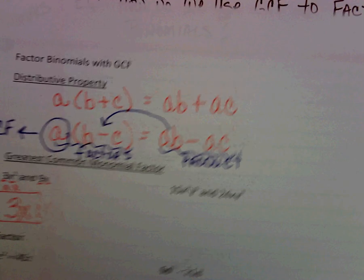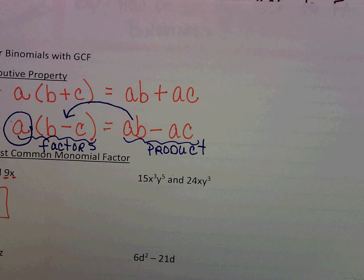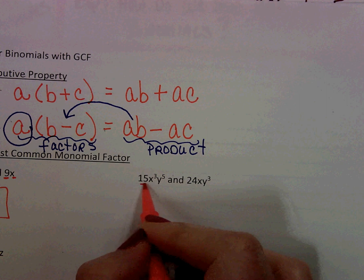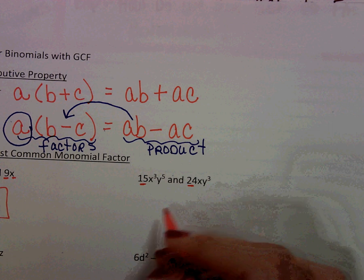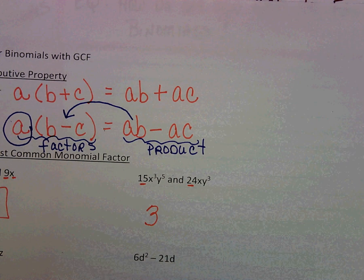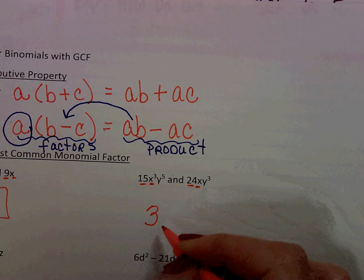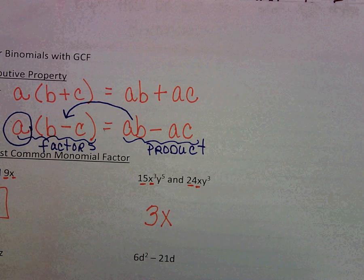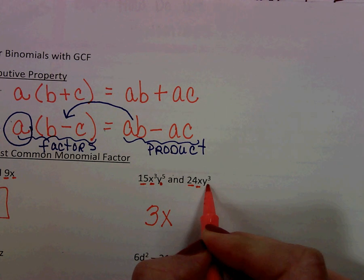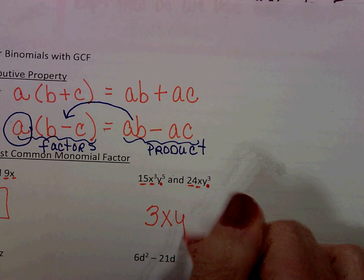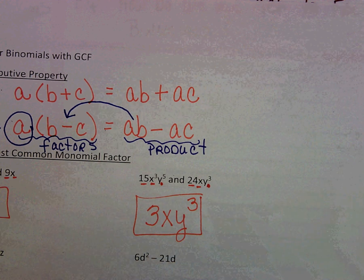Let's look at the next example. Maybe pause for a minute and see if you can think through it on your own. 15 and 24, what is their greatest common factor? It actually ends up being 3 again. My x's, I've got x to the 3rd here and 1x here, so they only have 1x in common. Let's look at our base y's. I've got 5 and 3, so they've got 3 in common. So it would be 3x, y to the 3rd is our greatest common factor.